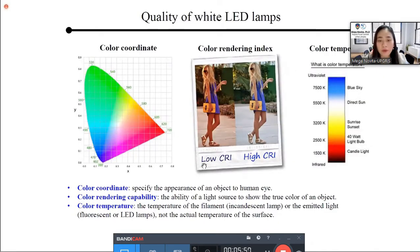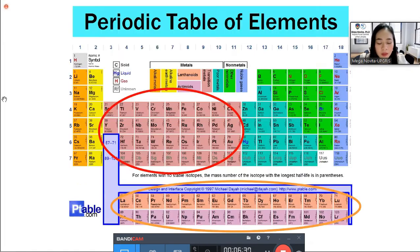So, what is the ideal white light that we want from LED? The quality of white LED lamps generally depends on some parameters, such as the color coordinate, color temperature, and also color rendering index. Color coordinate specifies the appearance of an object to human eye. Color rendering index indicates the ability of light source to show the true color of an object. Then, the color temperature indicates the temperature of the filament in case of light bulb or the temperature of the emitted light in the case of fluorescent and LED lamps. It is in Kelvin.